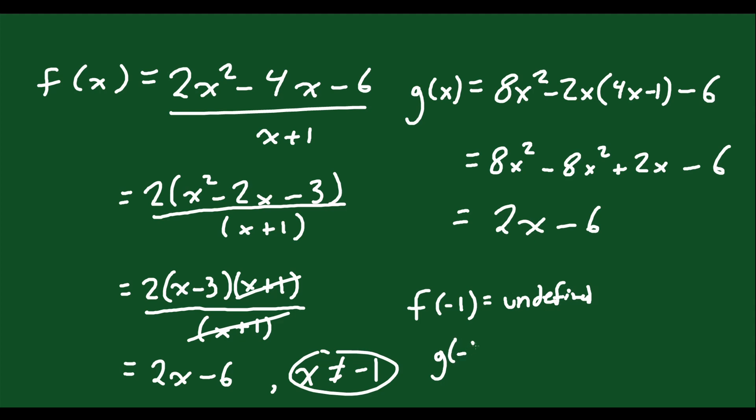But if you do g at negative 1, we do know the answer to that. You can just plug it in. You could also plug it into the original, but you're going to get the same thing. So 2 times negative 1 is negative 2. Negative 2 minus 6 is negative 8. So they have different y values, different answers. They're not equivalent when you're at negative 1. But for any other value of x, if you plug it into either function, you will get the same answer.